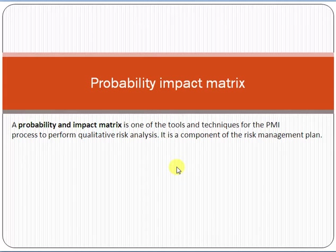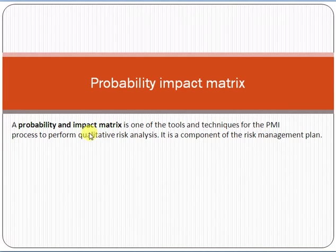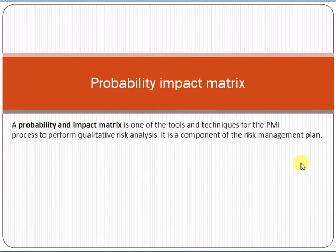The probability impact matrix comes under the concept of risk in project management. If we look at the definition, the probability impact matrix is one of the tools and techniques for the PMI process to perform qualitative risk analysis. It is a component of the risk management plan. So first, we have to understand what risk is before we can talk about the probability impact matrix.